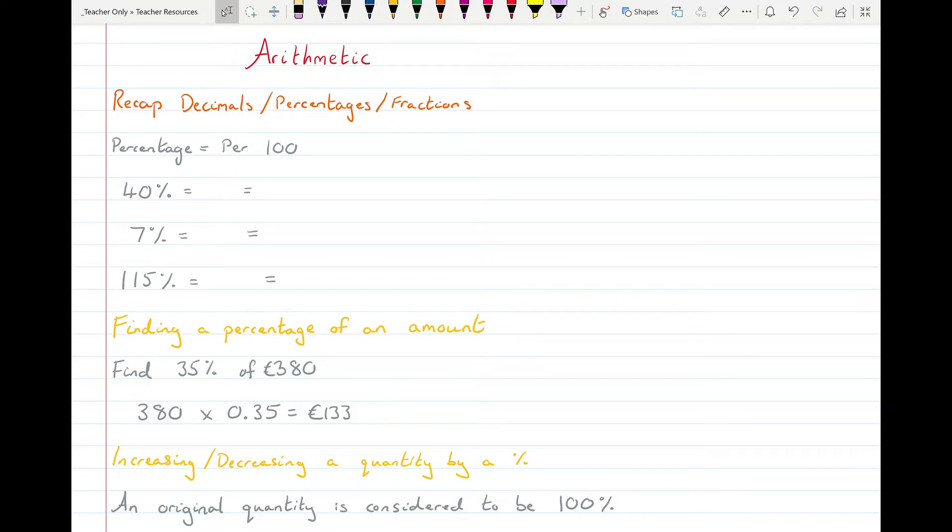Before we begin into income tax, we'll do a quick recap of decimals, percentages and fractions. If I have 40%, if I wanted to write that as a fraction it will be 40 over 100, and as a decimal that would be 0.4. 7% as a fraction will be 7 out of 100, or as a decimal it would be 0.07. That's 7%, not to be mixed up with 70% which will be 0.7, two very different things. 115%, so if it's more than a hundred percent, that would be 115 over 100 or as a decimal 1.15. So if you started with 100% and you increased it by 15% you'd have 115%.